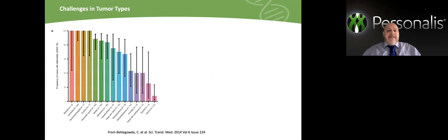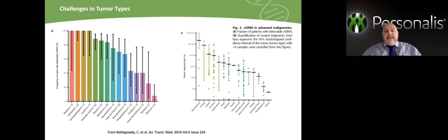Not all tumor types shed the same amount of ctDNA into the bloodstream. It is known in the literature, as shown here in this publication from Science Translational Medicine, that some tumors at late stage, like ovarian or breast cancer, shed more ctDNA than, for example, gliomas or renal cell carcinomas. And as indicated with the error bars, the variability within one particular tumor type can vary a lot.